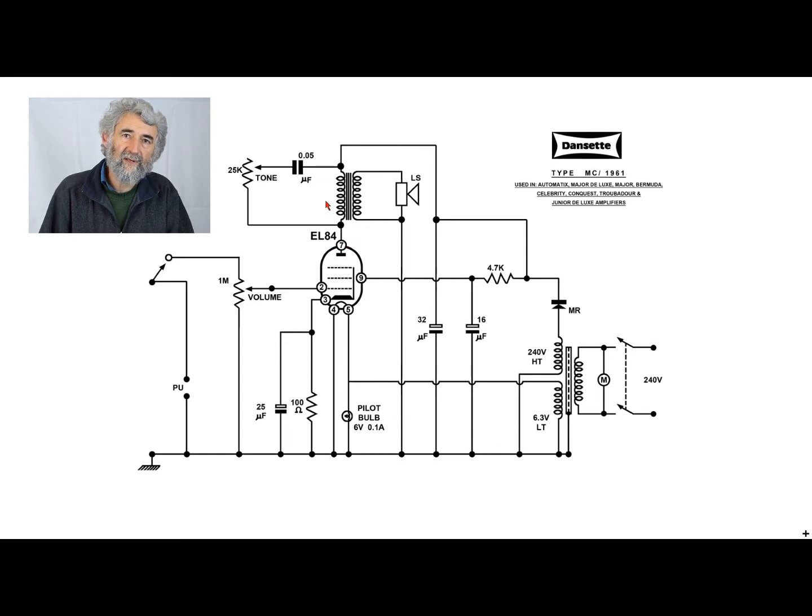You would normally have a fixed compensation capacitor across there. They have simply added the pot there so that you can adjust it. So you can have treble boost thanks to the valve's impedance, or you can have treble cut at the bottom, or if you set it somewhere in the middle, you get a neutral response.